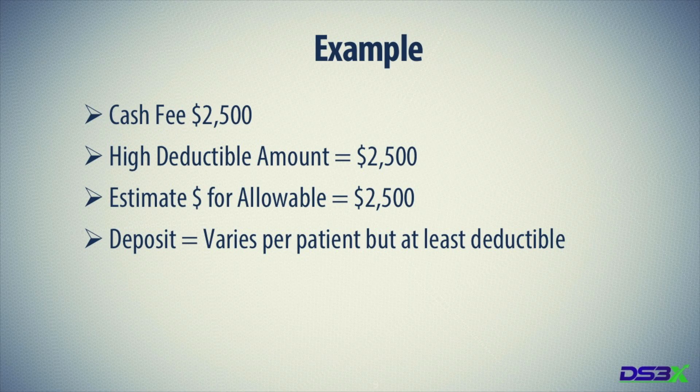We're going to come up with an example — don't put any credence into these numbers, these are not my exact fees, and we're not telling you what to charge. Let's say our cash fee — what we'd like to have on average — is $2,500. We consider the high deductible threshold to also be $2,500, meaning if someone's deductible is over $2,500 we're really not going to get any coverage. The estimated allowable is set at the same $2,500 to make the math easier, though you might raise those figures a little based on your experience.